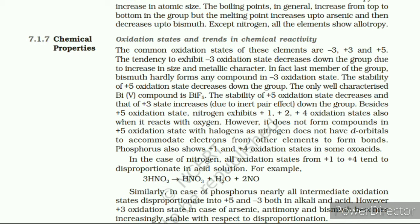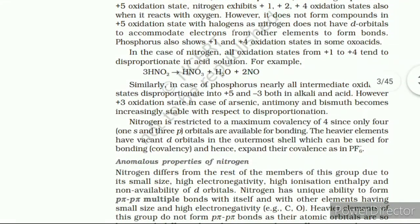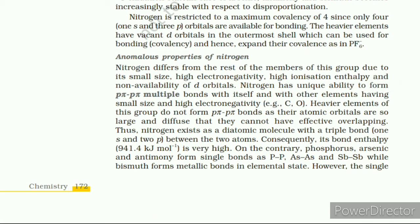Anomalous Properties of Nitrogen. Nitrogen differs from the rest of the members of its group due to its small size, high electronegativity, high ionization enthalpy, and non-availability of d orbitals. Nitrogen has a unique ability to form pπ–pπ multiple bonds with itself and other elements. Having small size and high electronegativity, heavier elements of this group do not form pπ–pπ bonds as their atomic orbitals are large and diffuse and cannot have effective overlapping. Thus nitrogen exists as a diatomic molecule with a triple bond between the two atoms; consequently its bond enthalpy is very high. On the contrary, phosphorus, arsenic, and antimony form single bonds as P–P, As–As. However, the single N–N bond is weaker than the P–P bond because of high inter-electronic repulsion of non-bonding orbitals owing to the small bond length, so the catenation tendency is weaker in nitrogen.